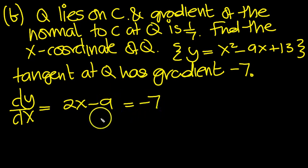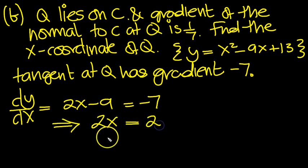Move that 9 over, leave the 2x where it is. Move the 9 over to plus 9. 9 take 7 is 2. Then divide by 2 both sides, or move this 2 from times to divide. 2 over 2 is 1.